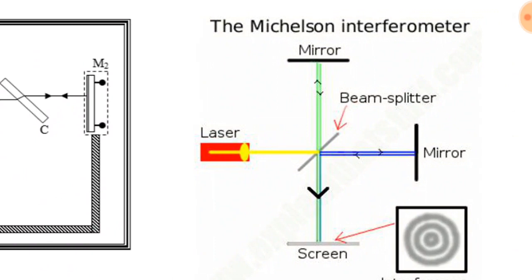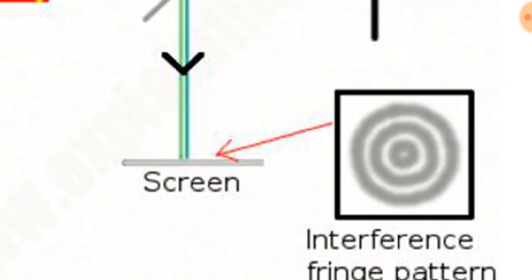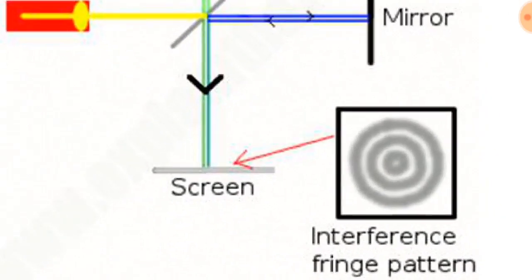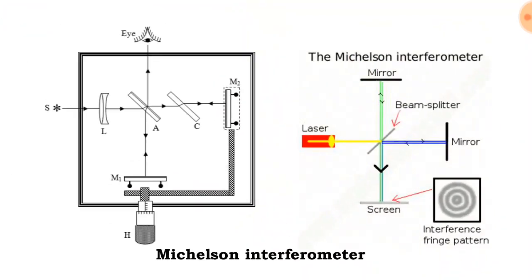It splits and falls on the two mirrors and then reflects back to the beam splitter, and then is finally shown on the screen. This is the interference fringe pattern. Using this we can determine the size of the component.